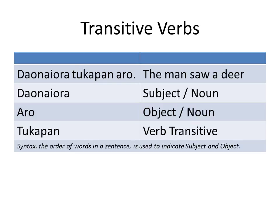Daunayora de Kapanado — the man saw a deer. Daunayora is the man, the subject. Aro is deer. Daunayora means 'he saw,' a transitive verb. Syntax, or the order of words in a sentence, is used to indicate subject and object.